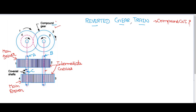Now why is the new name 'reverted gear train' given to this kind of gear arrangement? Gear number one is my main driver and gear number four is my main driven. Gear number one is mounted on axis A and gear number four is mounted on axis C, and axes A and C are co-linear with each other. Hence this is a type of reverted gear train, which is just a modification of a compound gear train.